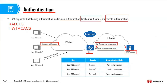Remote authentication is implemented using one of these protocols: RADIUS, or Huawei's proprietary protocol — the Huawei Terminal Access Controller Access Control Server protocol. These protocols enable the communication between the NAS and the AAA server. We can configure authentication schemes to domains: for example, domain one uses non-authentication, domain two uses local authentication, and domain three uses remote authentication.